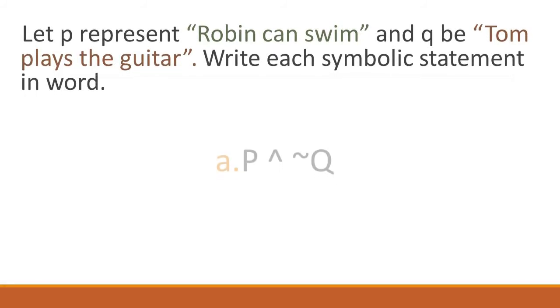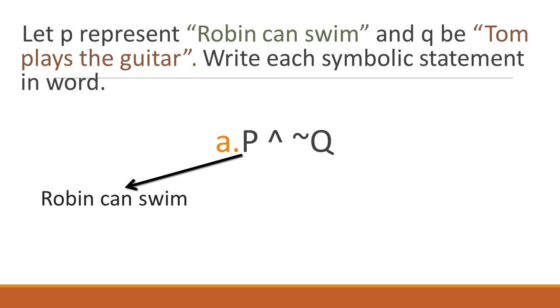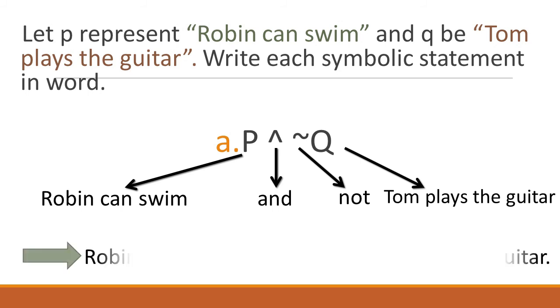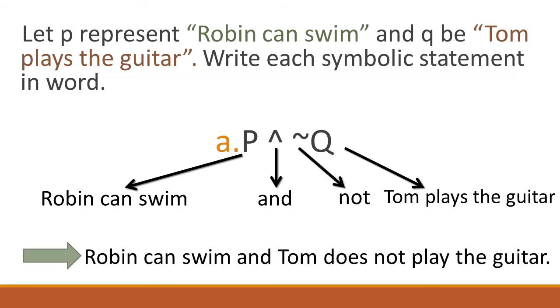P caret negate Q. We are going to change P with 'Robin can swim,' and change the caret with 'and.' The tilde will be changed by 'not.' Lastly, we change Q with 'Tom plays the guitar.' Good job, but let us rewrite your sentence as 'Robin can swim and Tom does not play the guitar.'